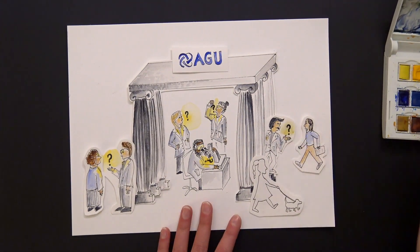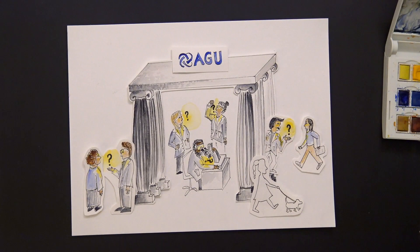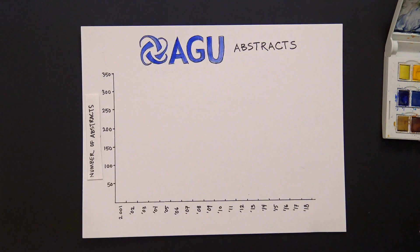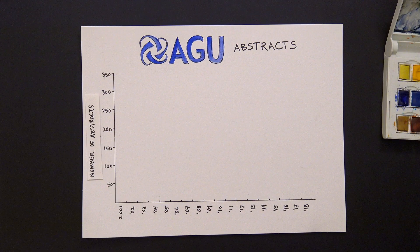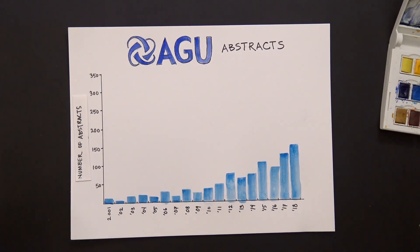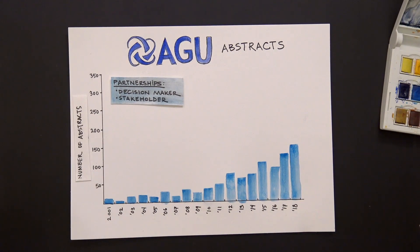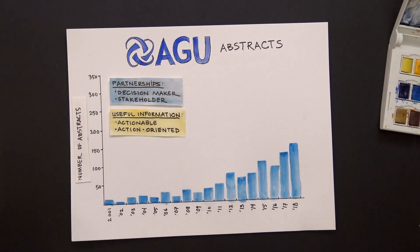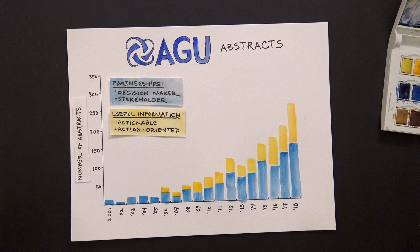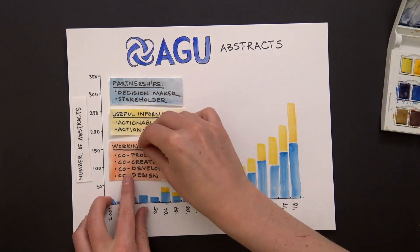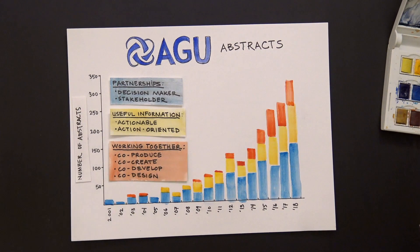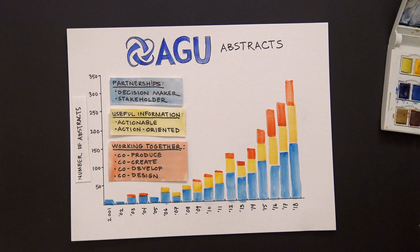If you search AGU abstracts throughout the years, you can see a marked increase in scientists connecting geoscience with society. Here are the amount of abstracts that use the terms decision-maker and stakeholder, which signifies an increase in partnerships. Here's how many more included actionable and action-oriented, which signifies a focus on generating useful information. And here's how many more use the terms co-produce, co-create, co-develop, and co-design, which signifies the importance of working together.